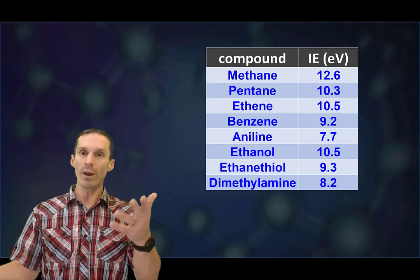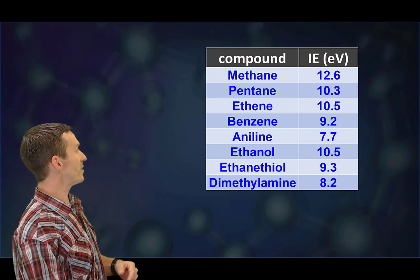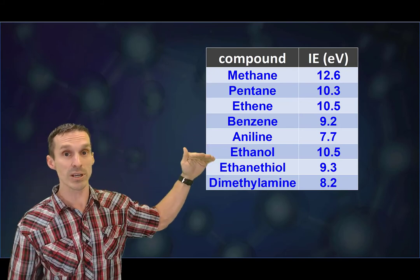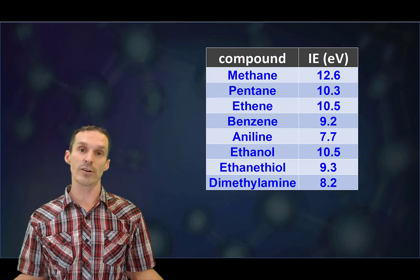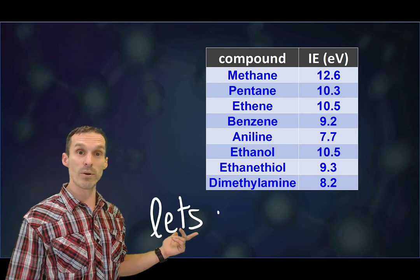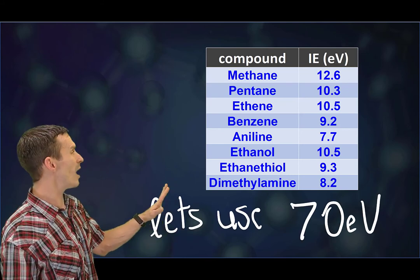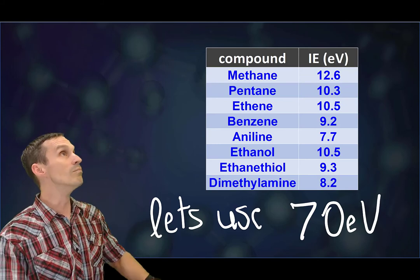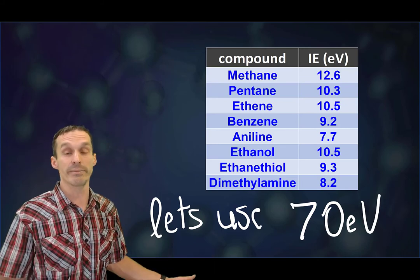Now let's ask, what energy should we pick? Based on all of these, let's make sure that it's at least that much. If you don't have that much energy, you're not going to have enough to ionize your compound. So we should pick at least that much energy. And in fact, the number that we pick is surprisingly high. We tend to pick 70 electron volts, more than enough to ionize everything.